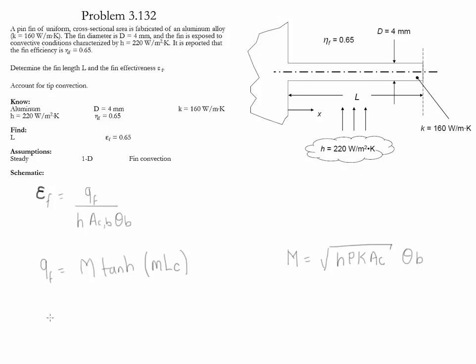Therefore, when we substitute all the equations and we do a little bit of cancellation, we find that the effectiveness is equal to 2 square root of k divided by square root of h d, hyperbolic tangent of m LC. Notice that all these values we know, including the value of LC that we obtained in the previous step, and we can find out that the effectiveness for this fin is equal to 23.5.